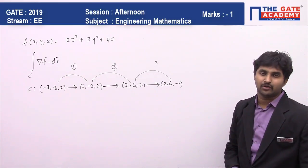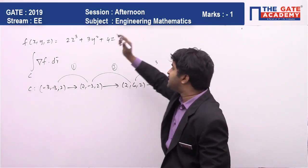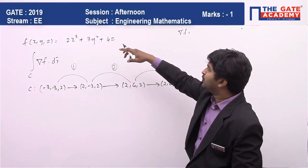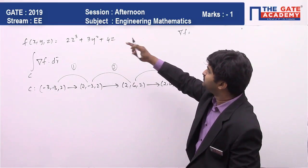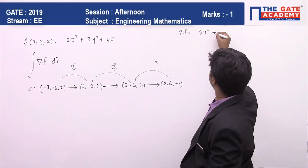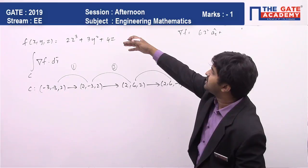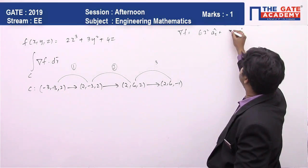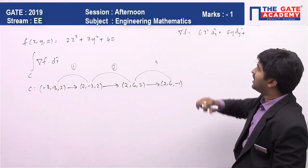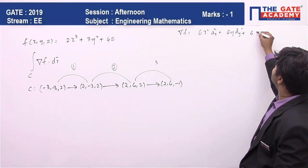First of all, let us find the gradient of f. The gradient of f is given by ∂f/∂x, which is 6x² in the x direction, ∂f/∂y in the y direction, which is 6y in the y direction, and ∂f/∂z, which is 4 in the z direction.